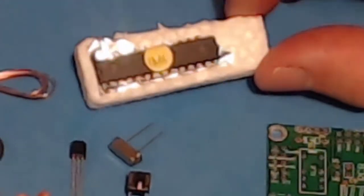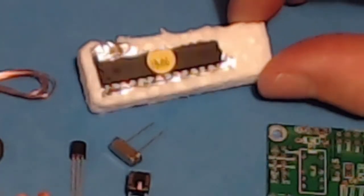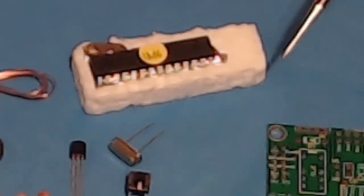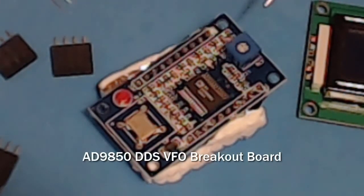The heart of the project is this little Atmega 328 chip. This is the same chip that's in an Arduino. So we have essentially an Arduino to control our AD9850 DDS module.